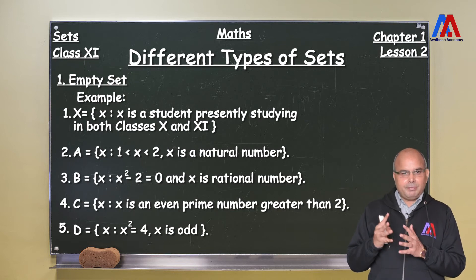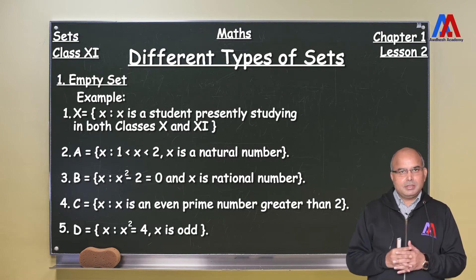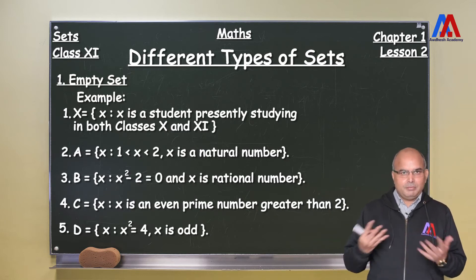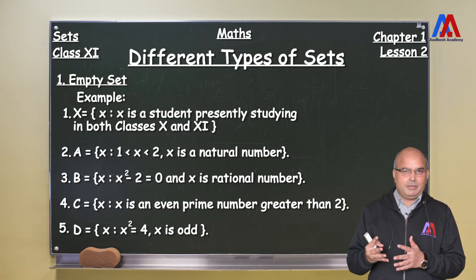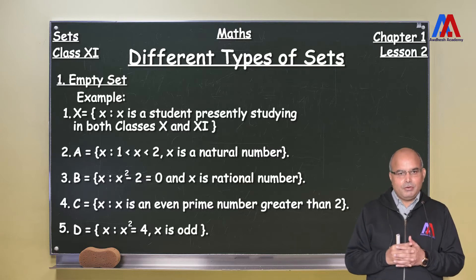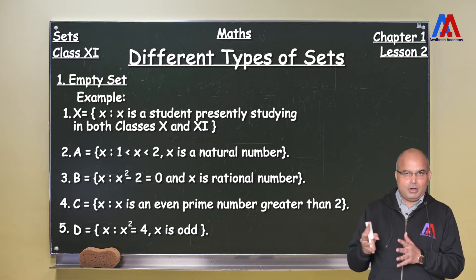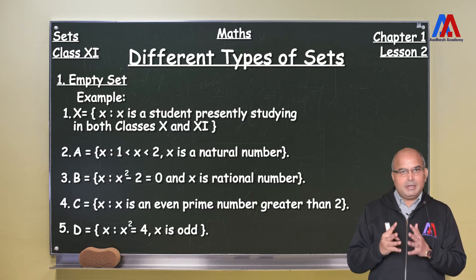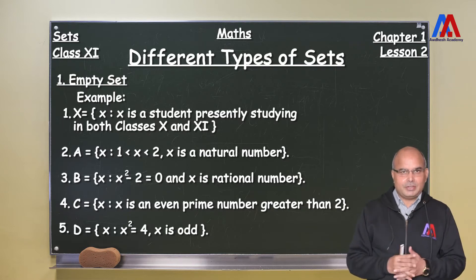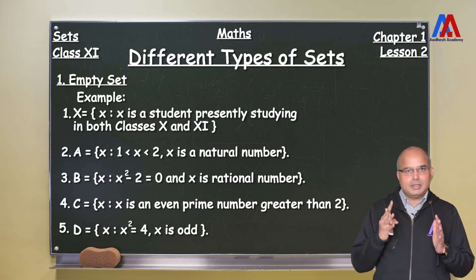Let's take the next example. If we say that x is an even prime number which is greater than 2, then this also cannot have any member because the only prime number which is even is 2. If the number goes more than 2, it is impossible to have any prime number which is even. Similarly, suppose x² = 4, then we know the value of x will be ±2. And in that situation, if it says x is odd, then there is no possibility of finding any member in this set. So by the definition, if we find that there is no value fitting in a set, it will be called an empty set.